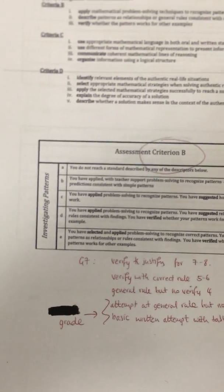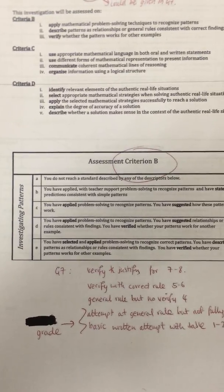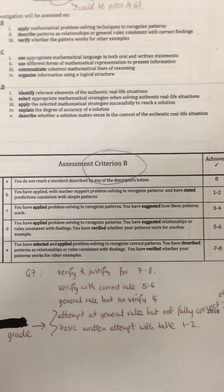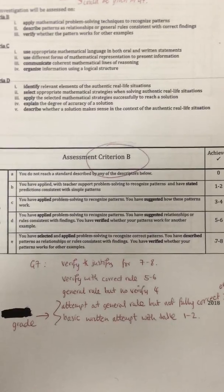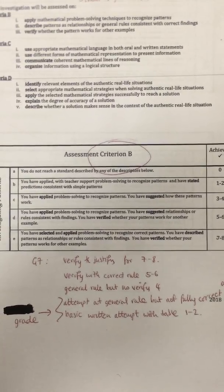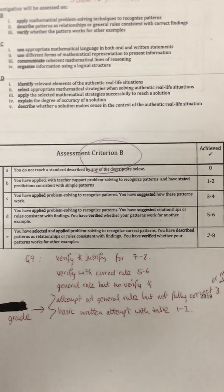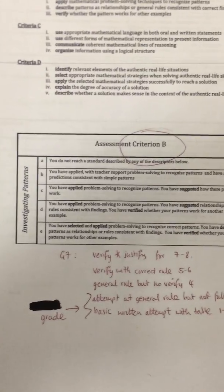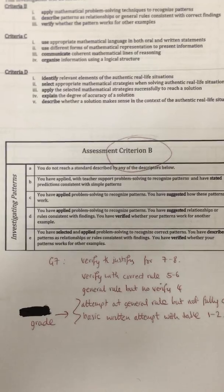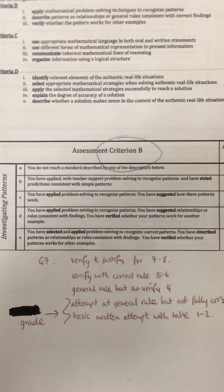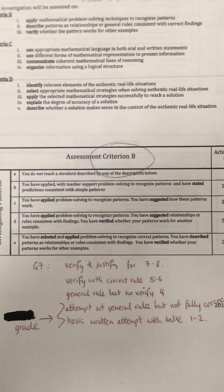In MYP, the assessment criteria for investigating patterns for grade 6 requires that for grade 7 and 8, students must justify their general rule using complex mathematics or another method. But for grade 6, in part D, they have applied problem solving to recognise patterns and suggested relationships or rules consistent with findings.